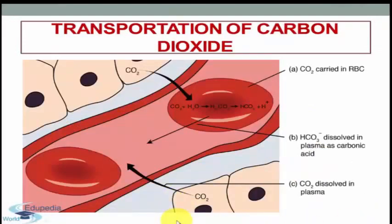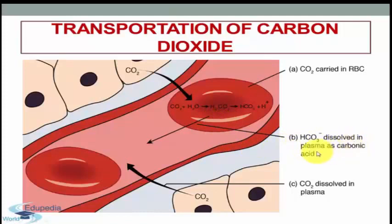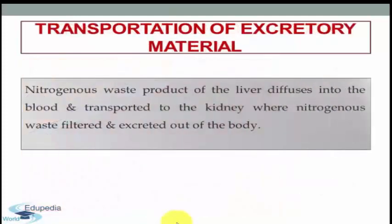The next function of blood is transportation of carbon dioxide. The blood carries carbon dioxide from the tissues to the lungs. It occurs partly in combination with hemoglobin and partly as a solution in blood plasma. As you can see in this image, carbon dioxide is carried in the red blood cell. The HCO3 is dissolved in plasma as carbonic acid and carbon dioxide dissolved in plasma. So transportation of carbon dioxide is the second and very important function of blood.